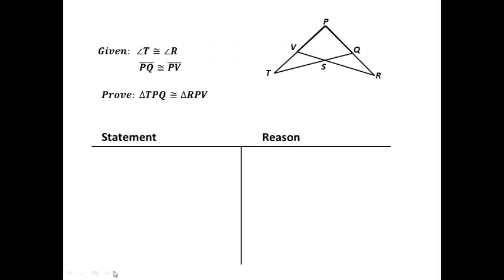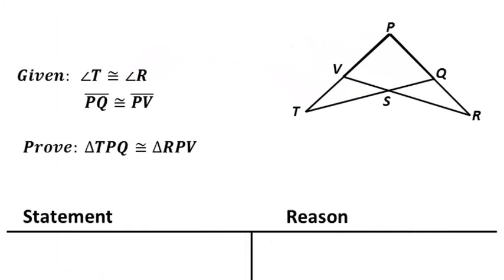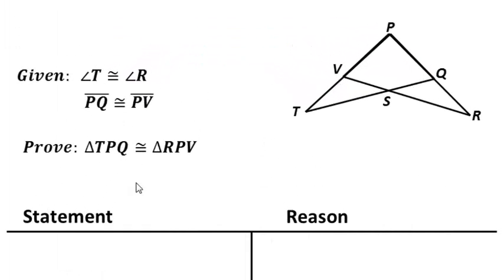Let's go ahead and jump right in, and we're going to dive in with a proof. First of all, we're trying to prove that triangle TPQ is congruent to triangle RPV, and let's start with marking our given information.